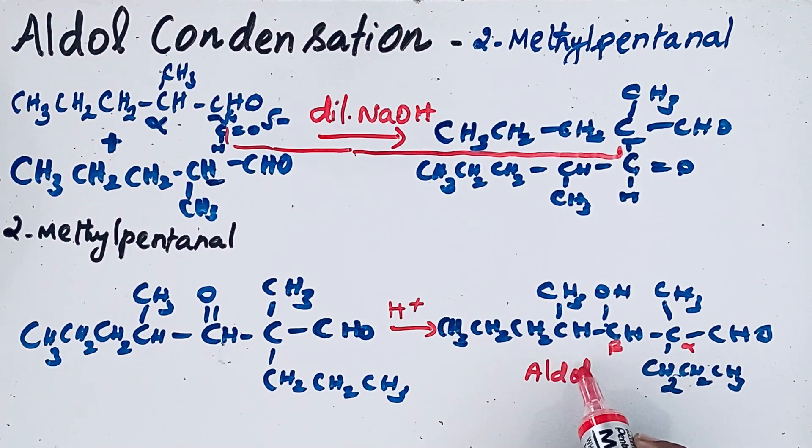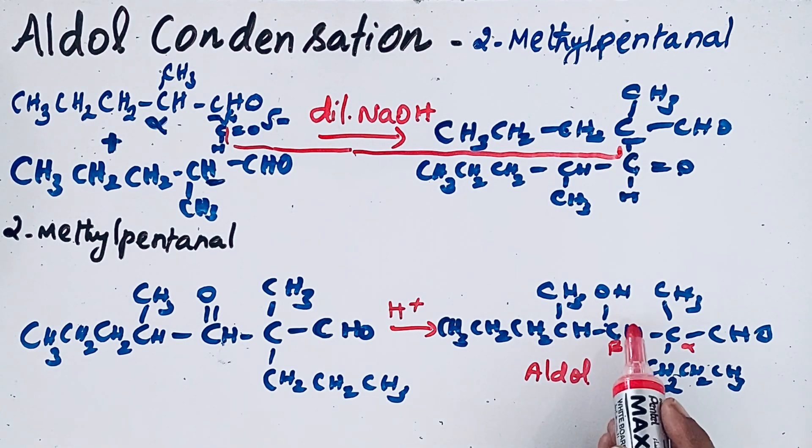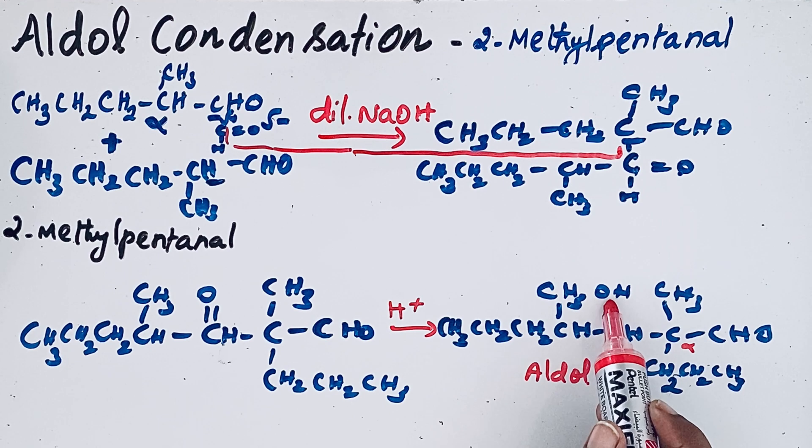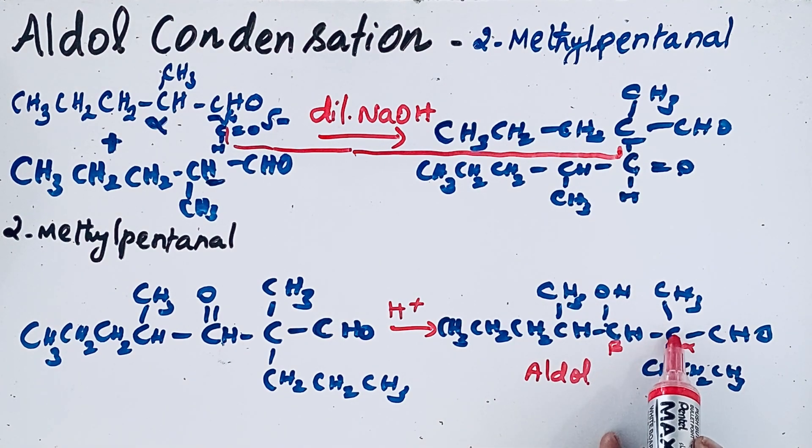Do you think that this product will undergo that condensation? For undergoing that condensation product, it undergoes dehydration. So for the dehydration, this OH group and another alpha hydrogen has to be removed. But look at this carbon. This carbon does not contain any hydrogen. Then alpha hydrogen is absent.